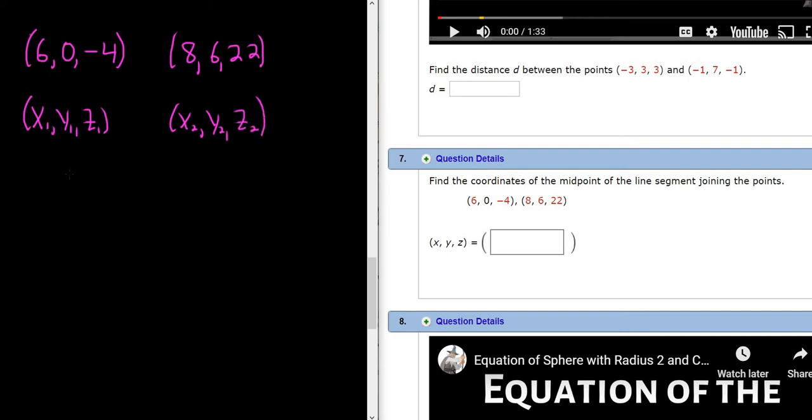all you do is add up the components and divide by 2. So the midpoint is the point right in the middle. It would be x1 plus x2 over 2, y1 plus y2 over 2, and z1 plus z2 over 2. So you just add up the coordinates and divide by 2.